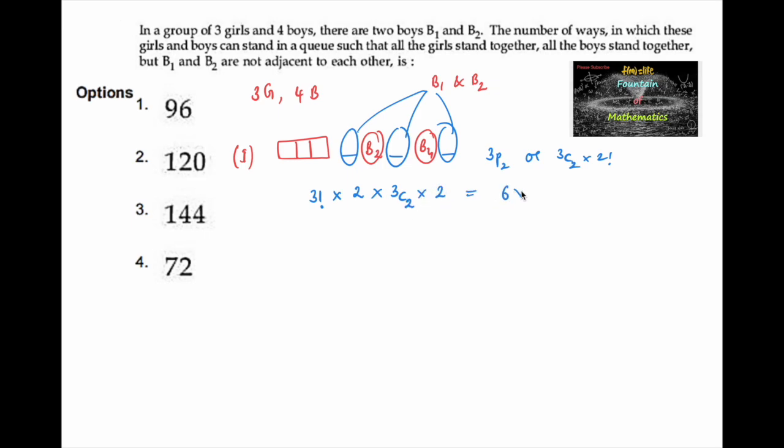3 factorial is 6, and here it is 2, and here 3C2 value is again 3 into 2. So we can write 2 threes are 6, 6 twos are 12, 12 sixes are 72 ways. In 72 ways we can arrange first girls and then boys.